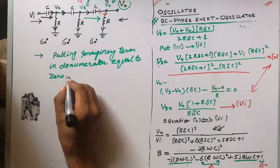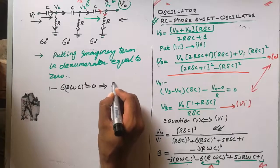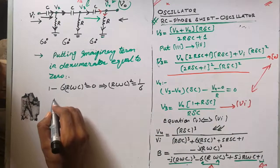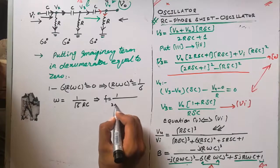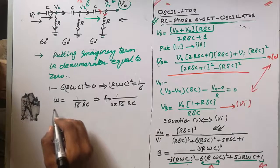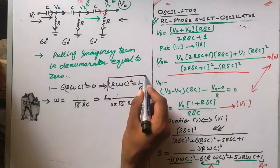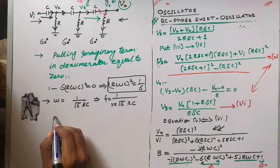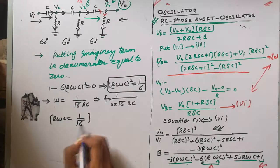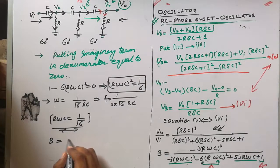To find the oscillation frequency, we set the imaginary part of the denominator to zero. The real part condition gives: 1 minus 6(RωC)² equals zero, which implies (RωC)² equals 1/6. Therefore omega equals 1 over (√6 · RC), and the frequency of oscillation is f equals 1 over (2π·√6·RC). This is the frequency at which the phase difference condition is satisfied.